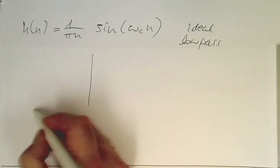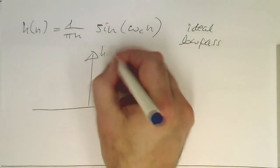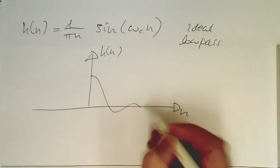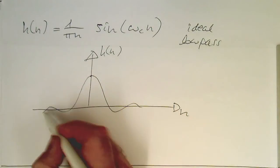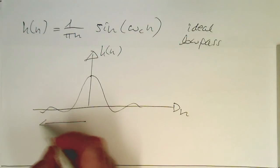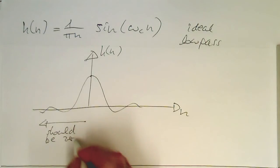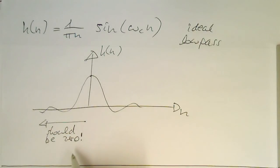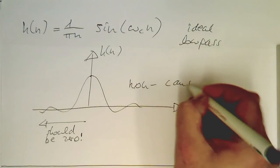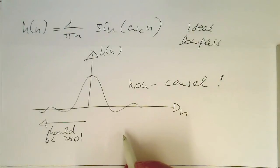If we plot h of n versus n, the response looks like a sinc shape. The problem is that anything for n less than zero should be zero — but it's not. Therefore this system is non-causal and cannot be implemented straight away on an FIR filter.